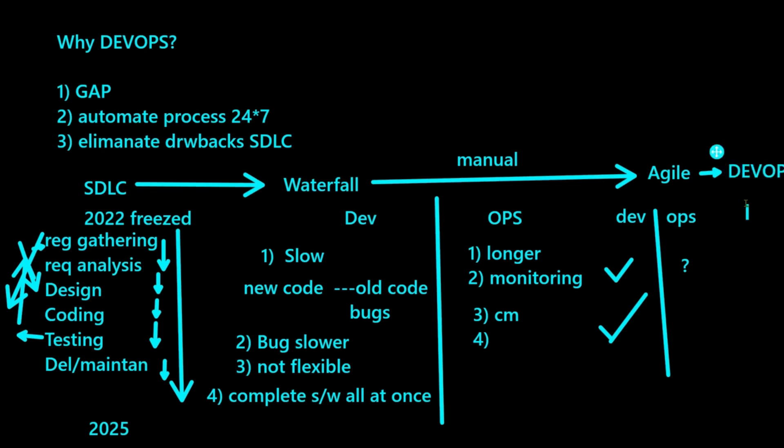That's where DevOps methodology came into picture, which could solve the problems of both the dev team and the ops team. Now you understand why DevOps came in: to eliminate the gap between the teams, to automate the process, and to eliminate the drawbacks posed by traditional methodologies like waterfall and Agile. Now we shall talk about what is DevOps — how it could eliminate the gap and how it can automate the process.